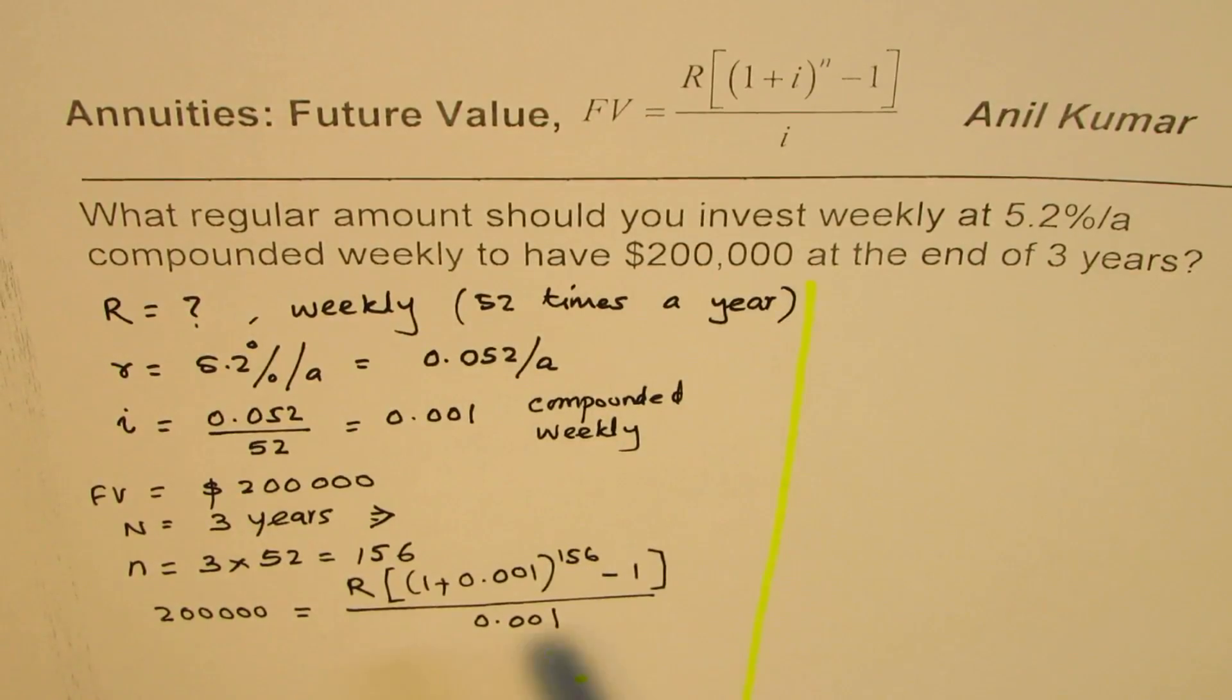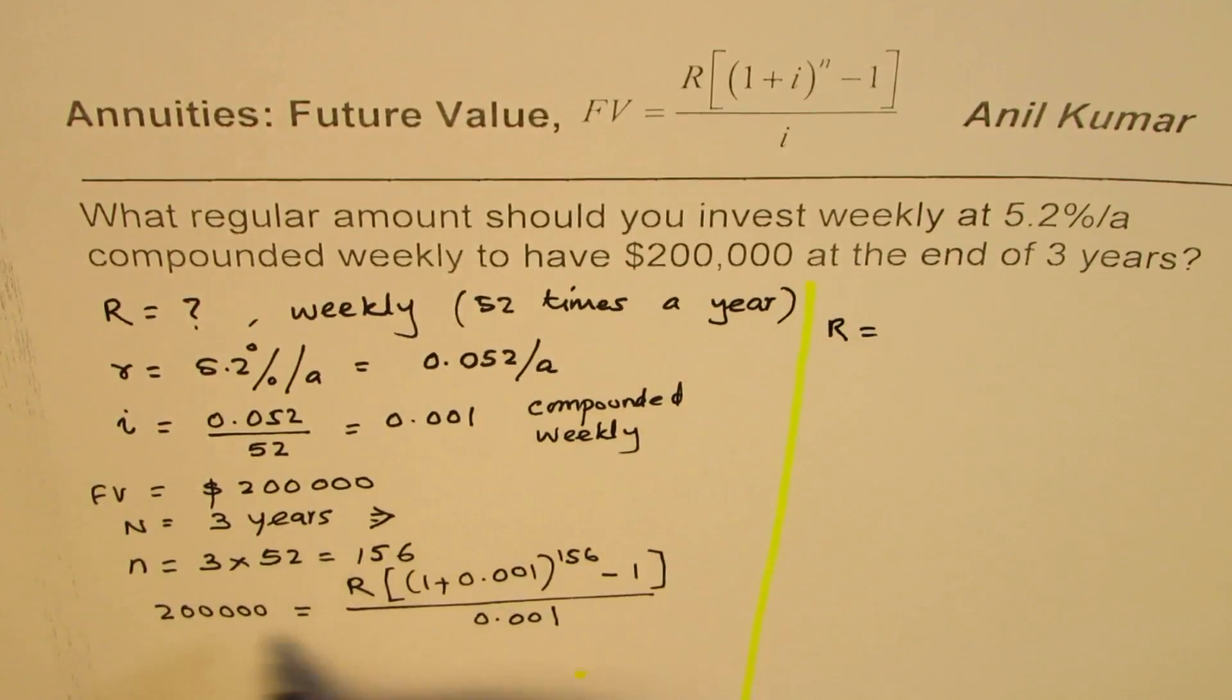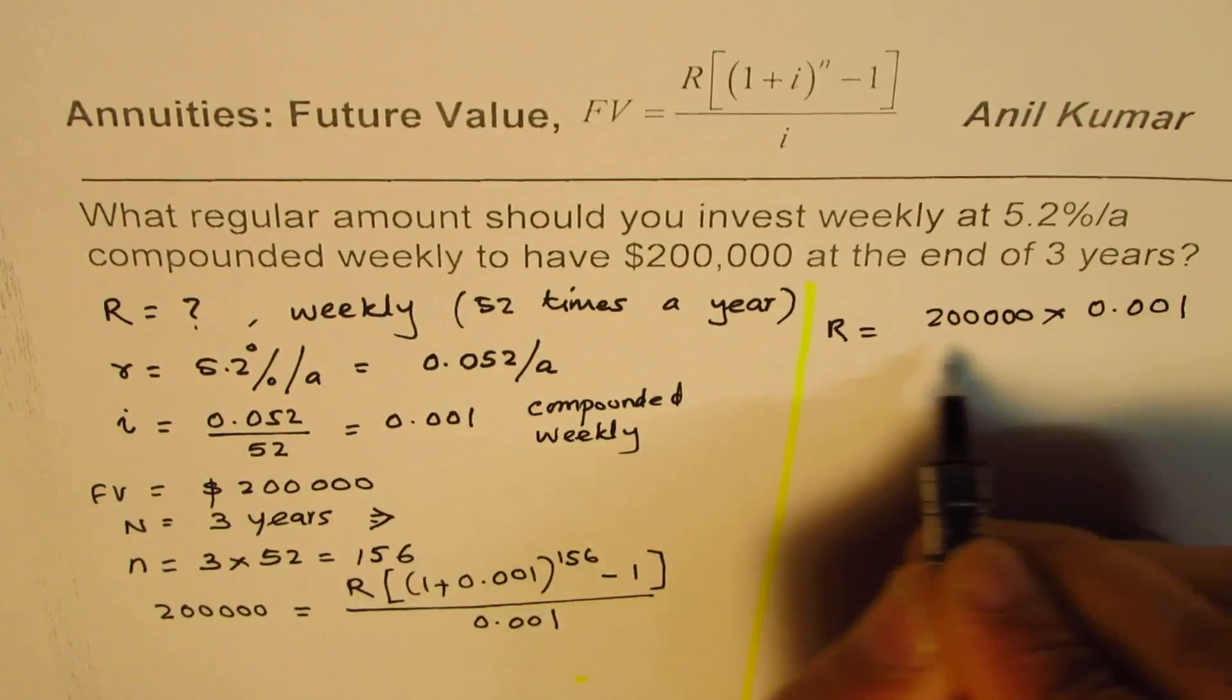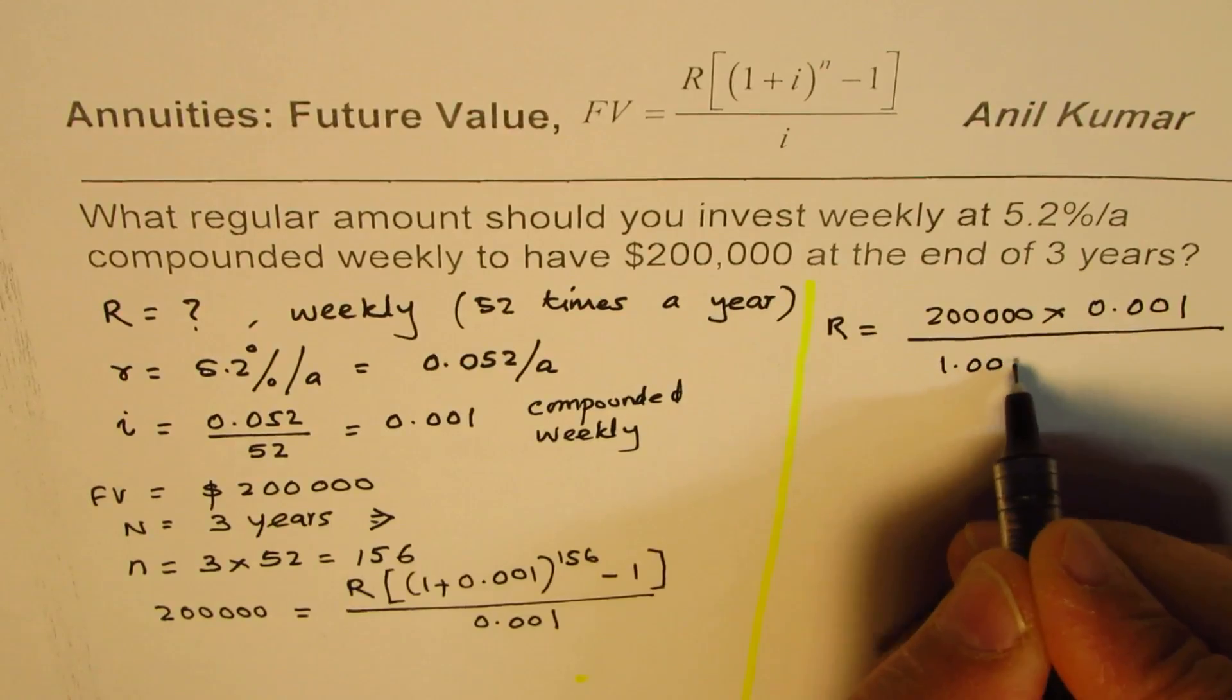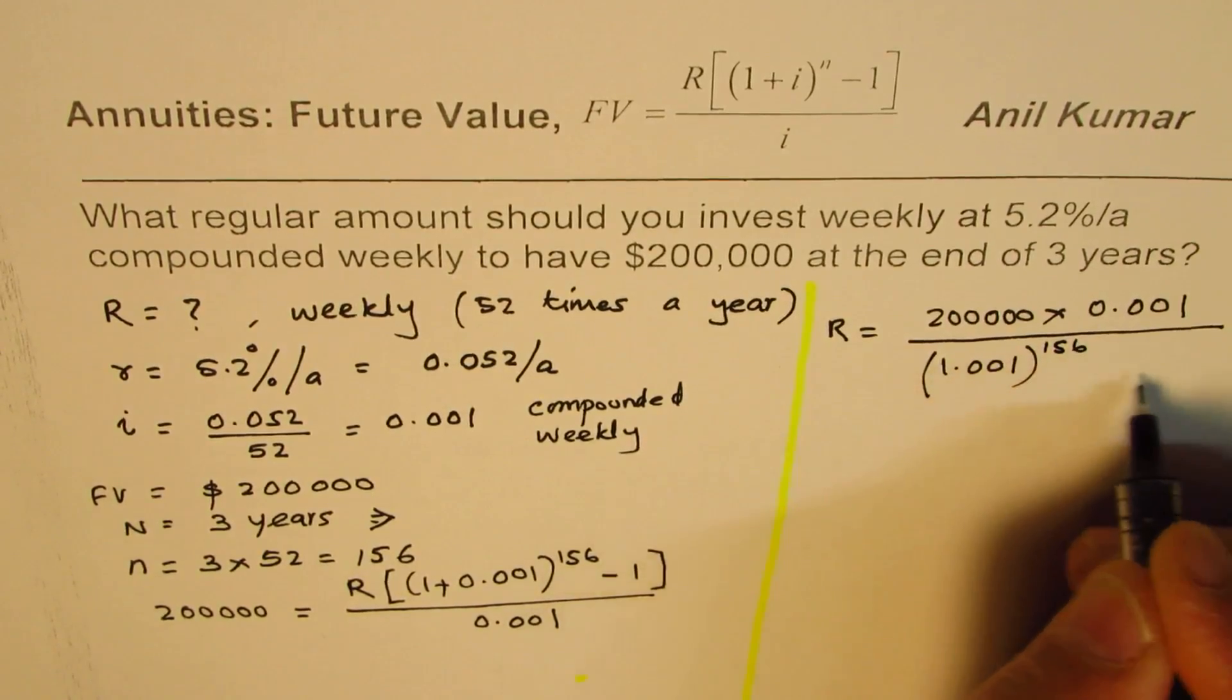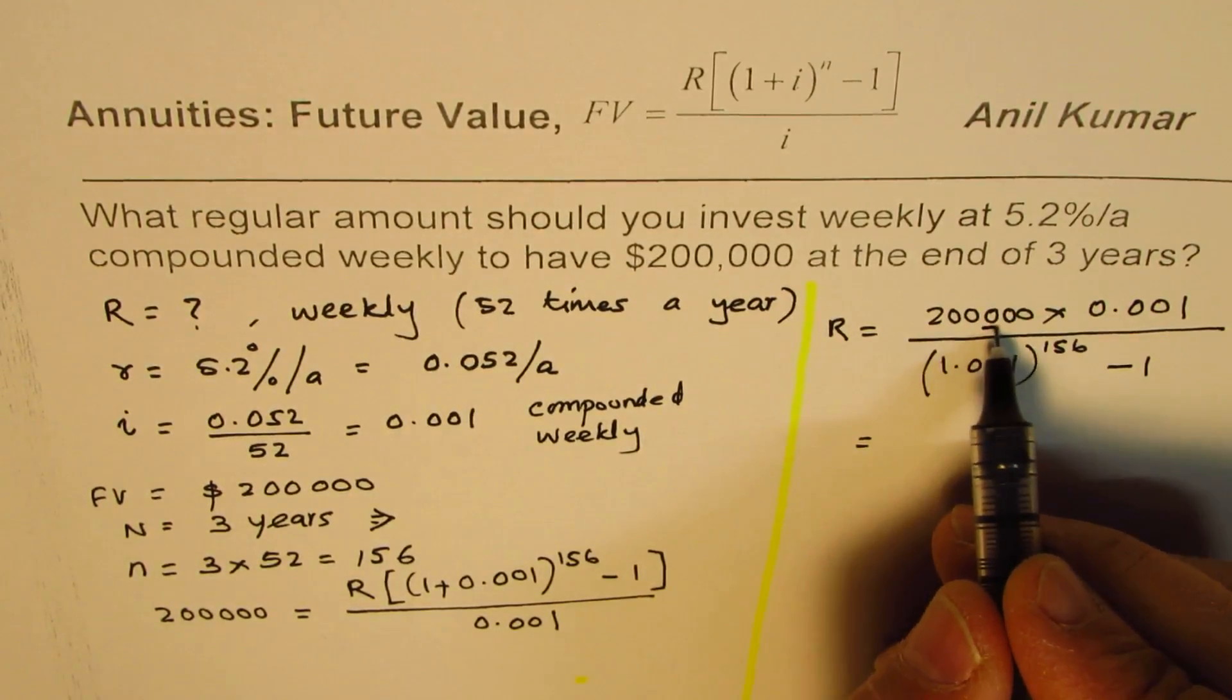So one way is just calculate these values, or you could rearrange. So let me just rearrange what R is equals to. So we'll multiply 200,000 by 0.001, divide this by all this, which is 1.001 to the power of 156 minus 1. Do you get the idea? So that is to say 3 decimal places. So we'll reduce 3.